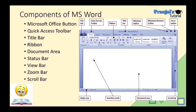Next, we have the View Bar, where we can select different views for MS Word. Then we have the Zoom Bar, which is used to increase or decrease the document display size. And finally, we have the Scroll Bar — there are two types: horizontal scroll bar and vertical scroll bar.